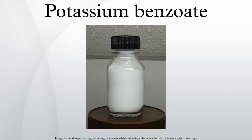Mechanism of food preservation: the mechanism begins with the absorption of benzoic acid into the cell. If the intracellular pH changes to 5 or lower, the anaerobic fermentation of glucose through phosphofructokinase is decreased by 95%.